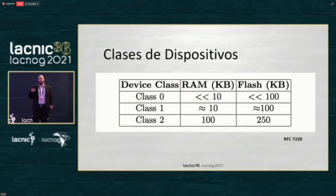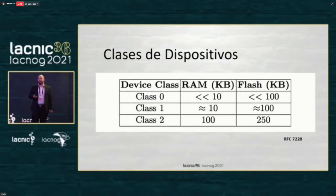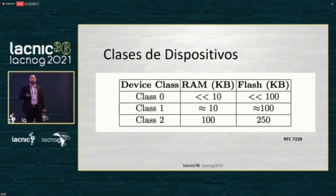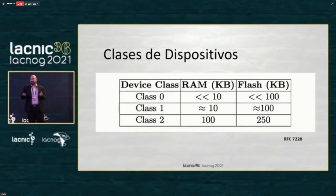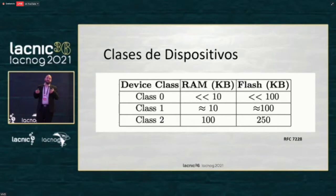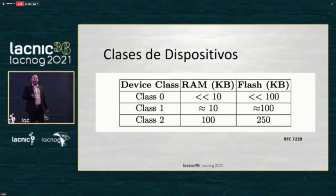Let me give you a brief introduction of the different types of devices. The Internet of Things has been designed for very small devices in terms of capacity, memory, and processing — that is the energy they need to use. There are three classes of devices: the very smallest with less than 10 kilobytes RAM and 100 kilobytes flash memory, then class one with 100 kilobytes flash and 10 kilobytes RAM.